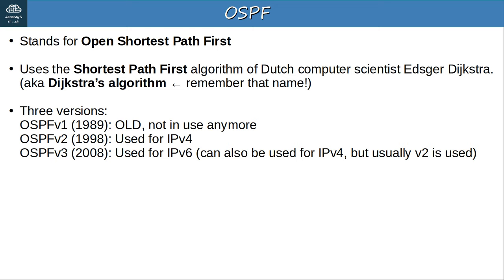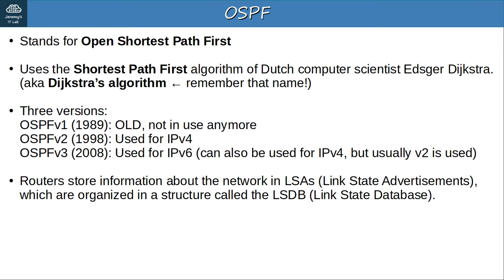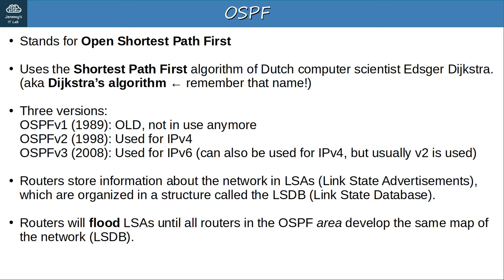Routers store information about the network in LSAs — link state advertisements — which are organized in a structure called the LSDB, link state database. LSA and LSDB are two important terms for OSPF. Routers will flood LSAs until all routers in the OSPF area develop the same map of the network, meaning the same LSDB. In OSPF, flooding means sending LSAs to all of their OSPF neighbors. OSPF areas are a unique aspect of OSPF, and I'll talk more about them later in this video.